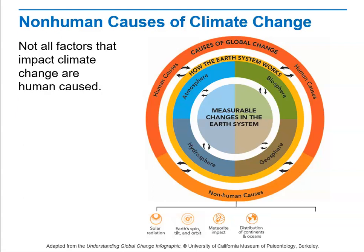The distribution of continents and oceans also plays a role. The continents are actually moving very slowly, and when they are distributed around the Earth, the Earth absorbs heat differently than when the continents are bunched together. These are changes that happen over millions or billions of years, but they still result in climate change.